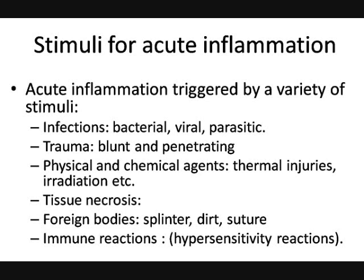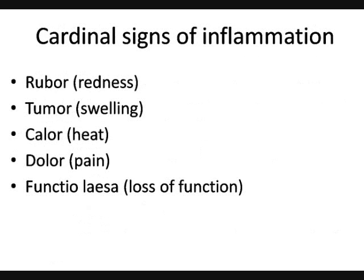There are five cardinal signs of inflammation: ruber, tumor, calor, dolor, and functio laesa. Ruber means redness, tumor means swelling, calor means heat, dolor means pain, and functio laesa is Latin for loss of function. These are the five cardinal signs — heat, redness, swelling, pain, and loss of function.